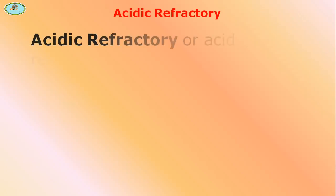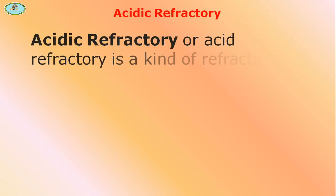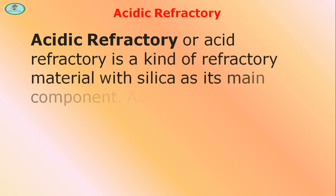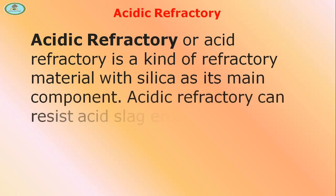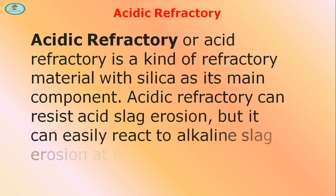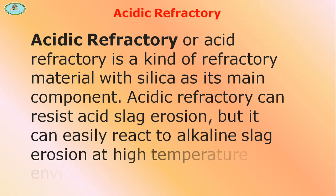Acidic Refractory, or acid refractory, is a kind of refractory material with silica as its main component. Acidic refractory can resist acid slag erosion, but it can easily react to alkaline slag erosion at high temperature environments.